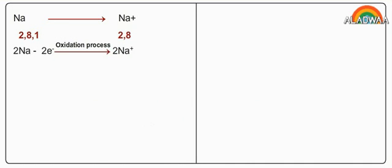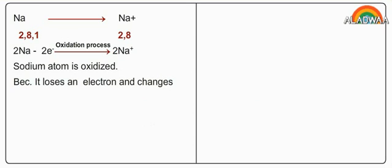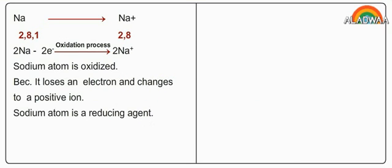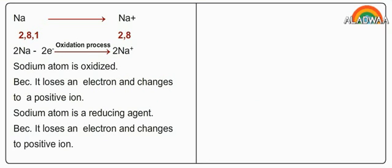2Na minus 2e⁻ produces 2Na⁺ ion. Oxidation process: sodium atom is oxidized because it loses an electron and changes to a positive ion. Sodium atom is a reducing agent because it loses an electron and changes to a positive ion.